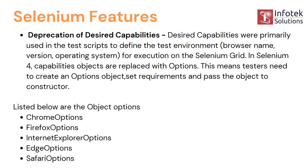The next feature is the deprecation of Desired Capabilities. In Selenium 4, the latest version, capabilities objects are replaced with Options. Previously we used Desired Capabilities — it's still in use — but we now have a better option called Options. This means the tester needs to create an Options object, set requirements, and pass the object to the constructor.